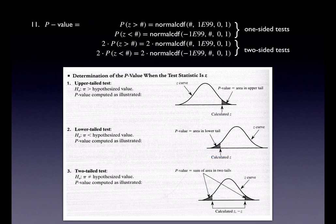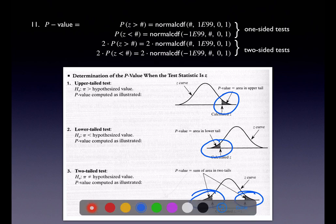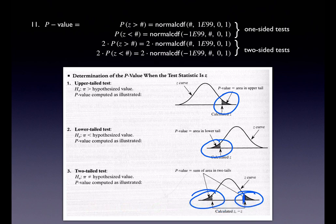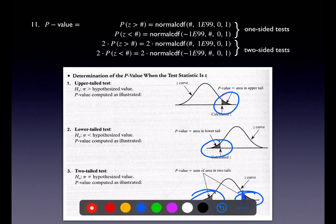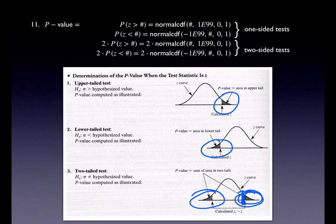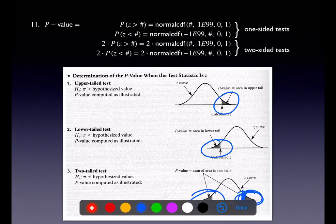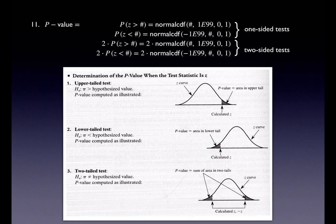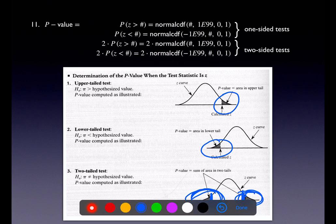For the two-sided z-test p-value: if your z score is positive, calculate that right-tail area and double it for symmetry. If your z score is negative, calculate that left-tail area and double it for symmetry.